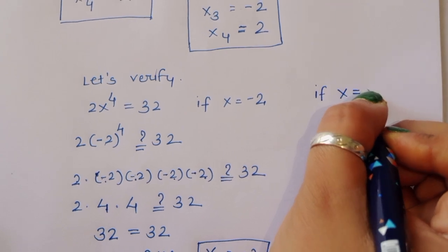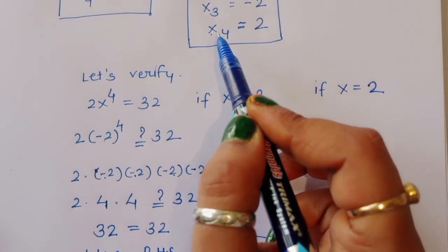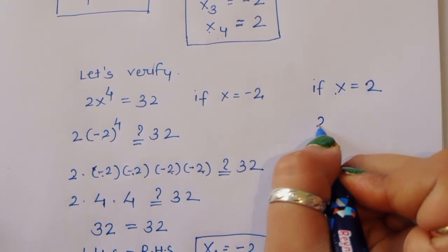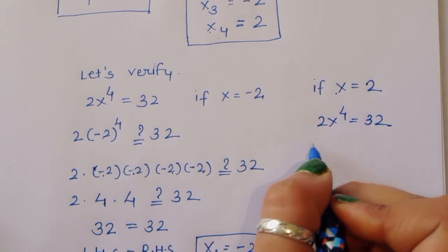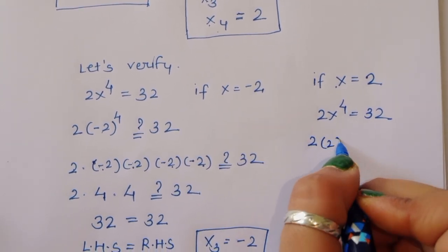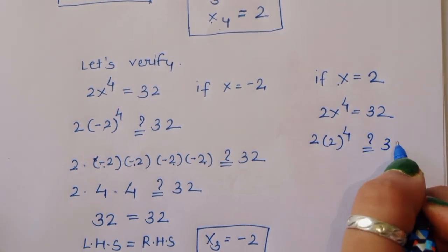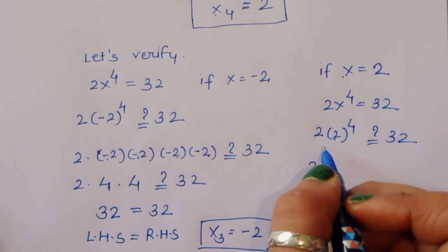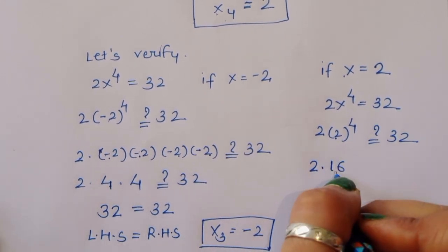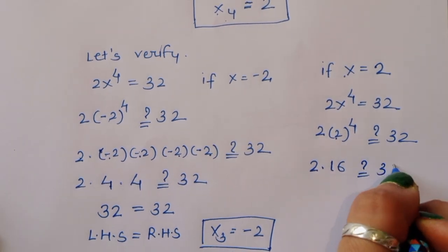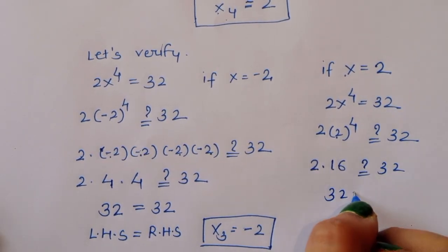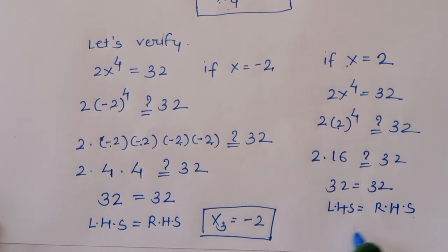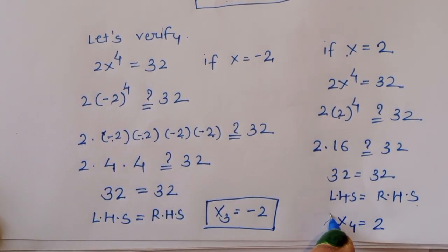Verification for x₄ = 2: substituting into 2x⁴ = 32, we get 2 × 2⁴ = 2 × 16 = 32. So LHS = RHS, confirming that x₄ = 2 is also a correct solution.